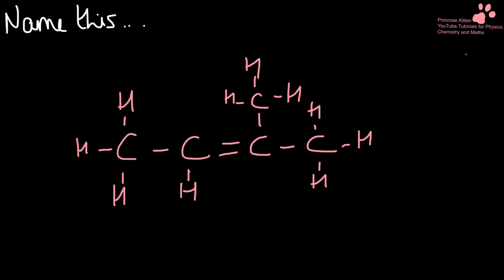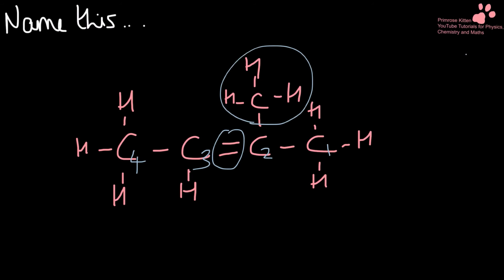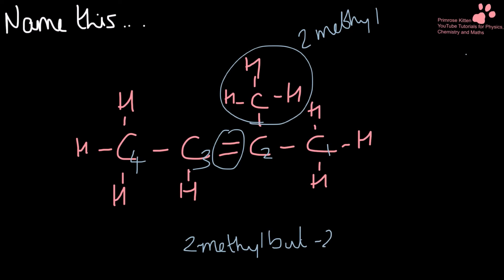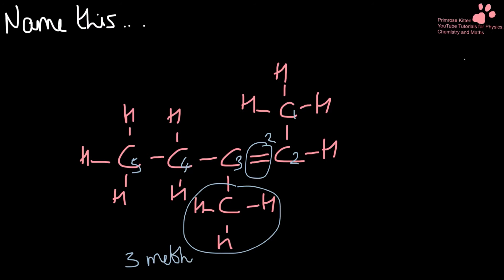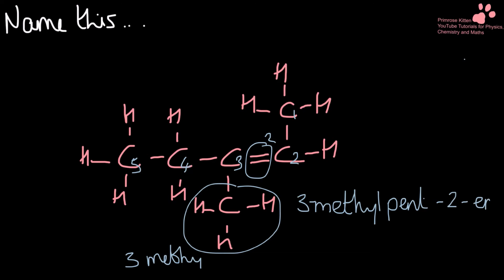Name this. So we have one, two, three, four as our carbons. We have our double bond functional group here, and we have the two-methyl functional group, so that is 2-methylbut-2-ene. Name this. This one is slightly trickier because I'm going around a corner — there are five carbons in a row. We've got our double bond on carbon number two and a three-methyl functional group as well, so that makes it 3-methylpent-2-ene.